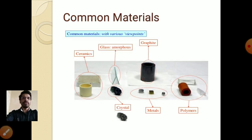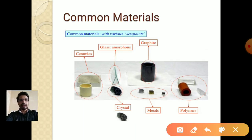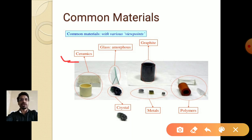Now I want to introduce you to some common materials. Ceramics is one common material — some parts of microwave ovens are made of ceramics because of their ability to withstand higher temperatures. Then there is glass — the structure of glass is amorphous, which we will discuss in the next slides.